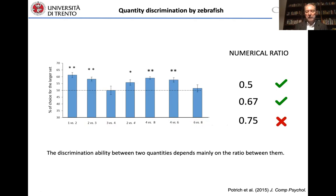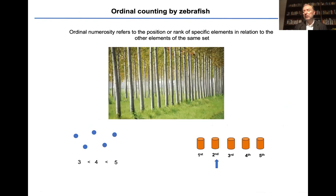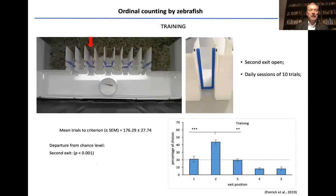We also tested zebrafish for ordinal aspects of number understanding, that is ordinal numerosity that refers to the position or rank of specific elements in relation to other elements in our sets. For instance, zebrafish were tested along a corridor and there are a series of doors which are blocked by plexiglass, but by pushing, one allows the fish to exit and enter a larger environment with food and females.